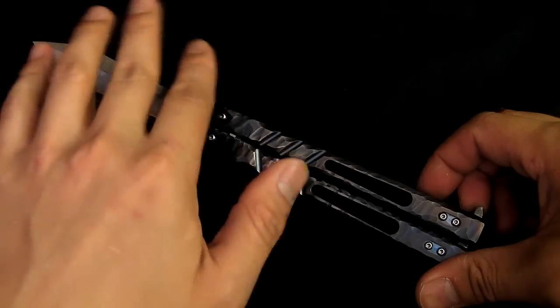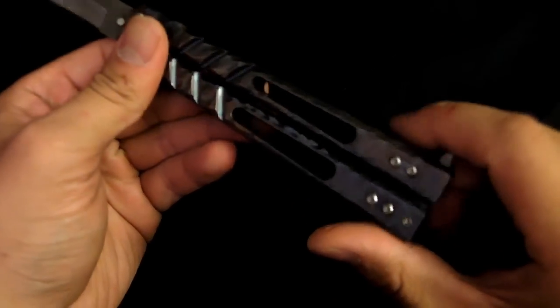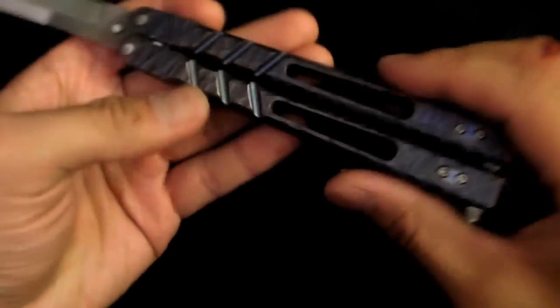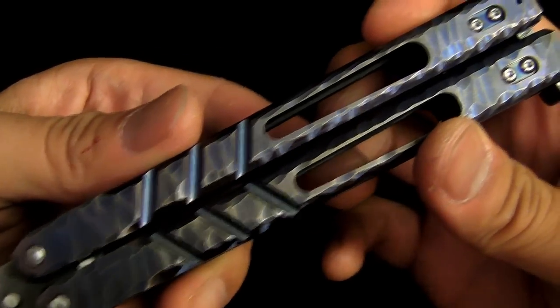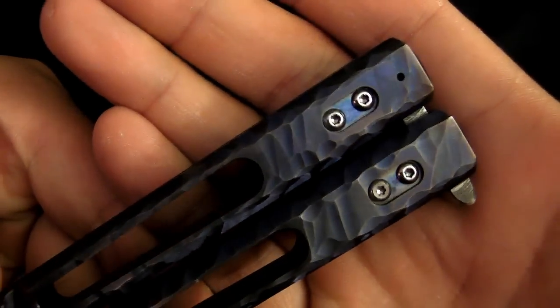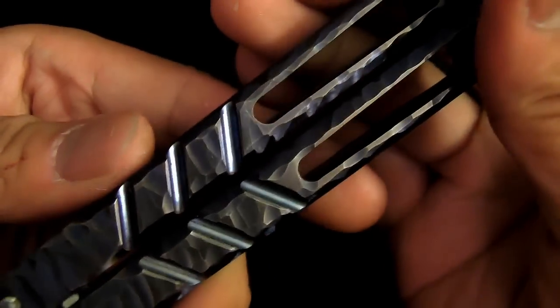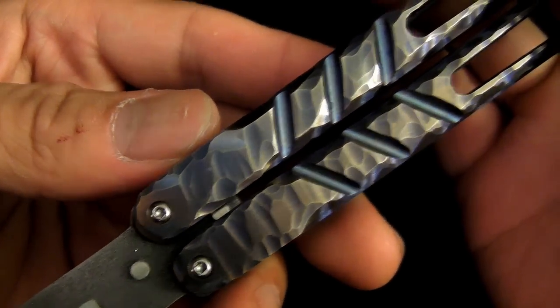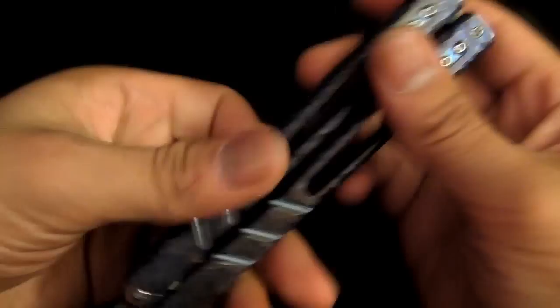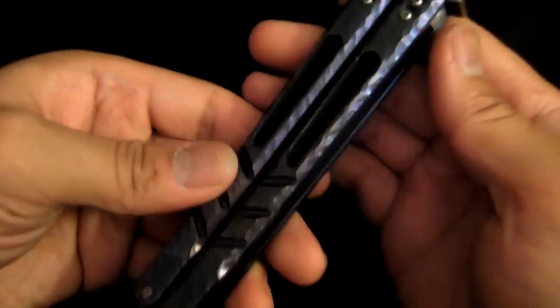So this one in particular was anodized purple and then this finish on the handles was put on it. It's really cool. It's this chipped look that just goes throughout the entire handle. I think the look really fits the whole vibe of the Alpha Beast and the name Fossil really just fits it because that's kind of what it looks like. It just looks like a balisong fossil.